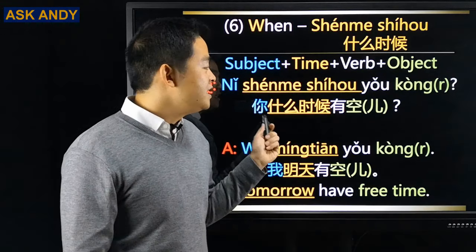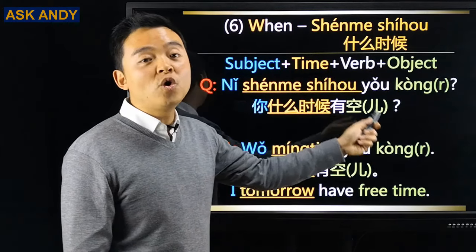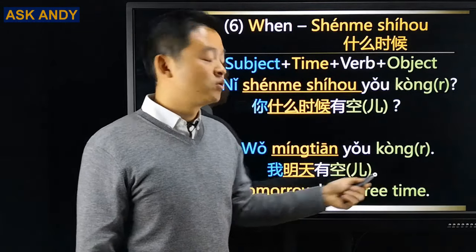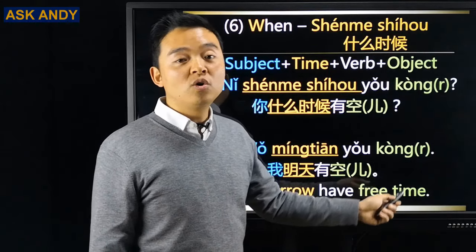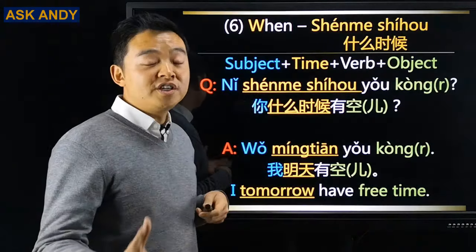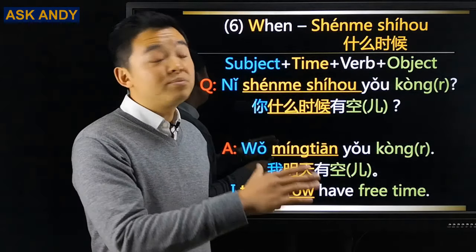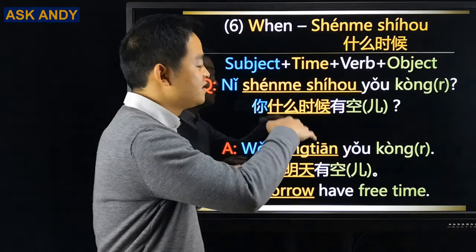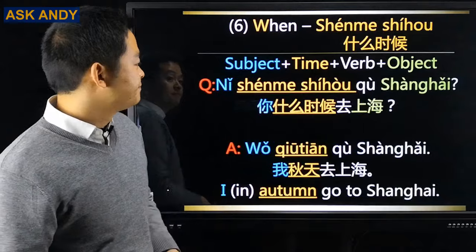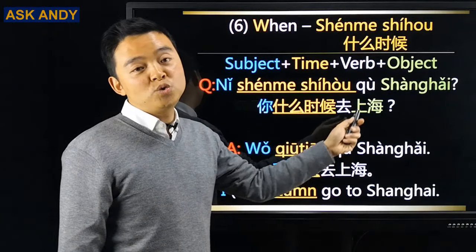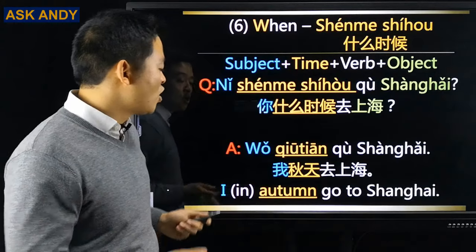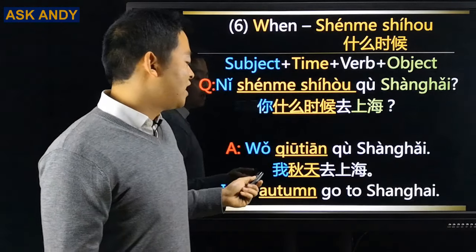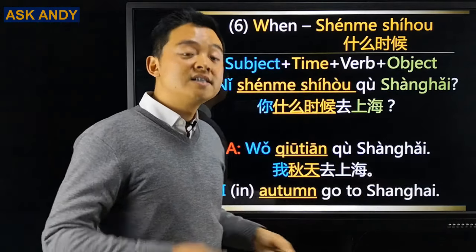你什么时候有空? → 我明天有空 (I'm free tomorrow). No matter what the pattern is, quote and replace — follow the same word order from question to answer. 你什么时候去上海? → 我秋天去上海 (I go to Shanghai in autumn).